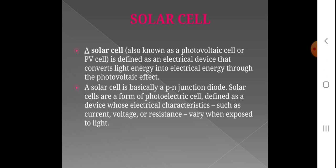This solar cell is basically a PN junction diode made of semiconductor material. In the solar cell, there is a PN junction diode. Solar cells are a form of photoelectric cells, defined as a device whose electrical characteristics such as current, voltage, or resistance vary when exposed to light.